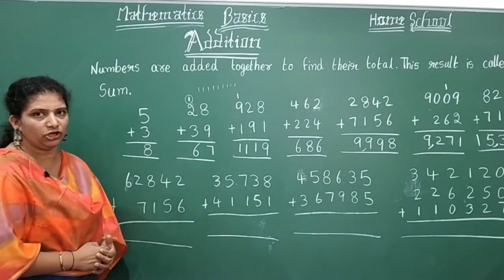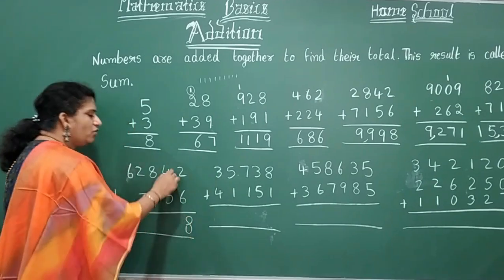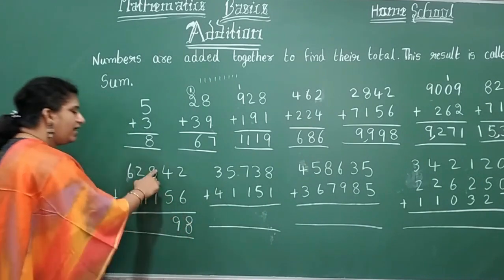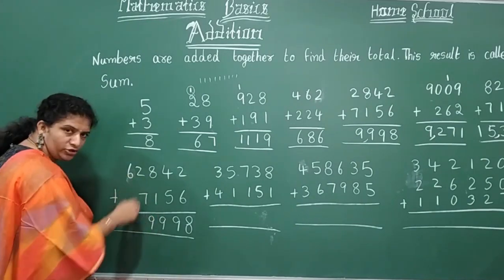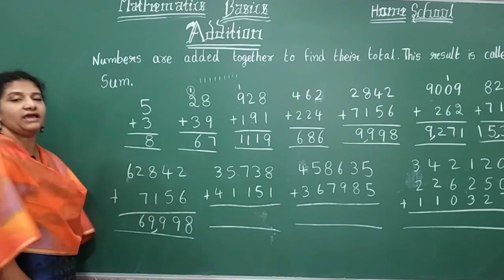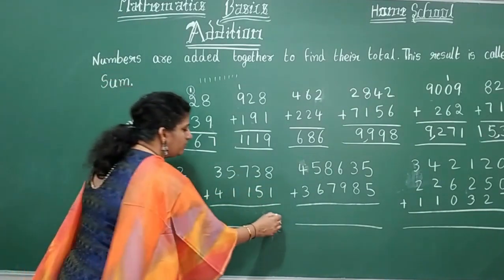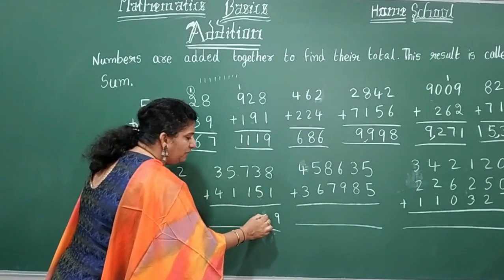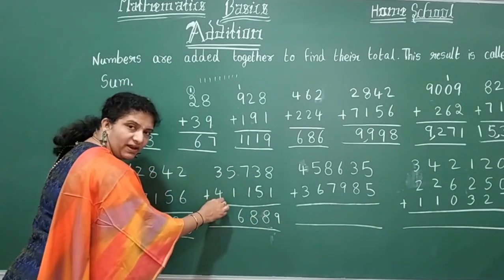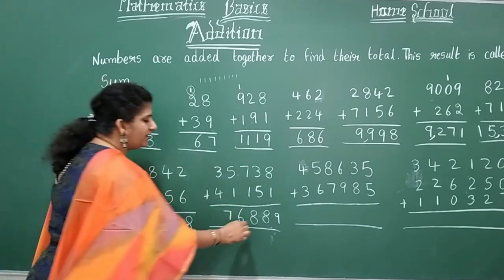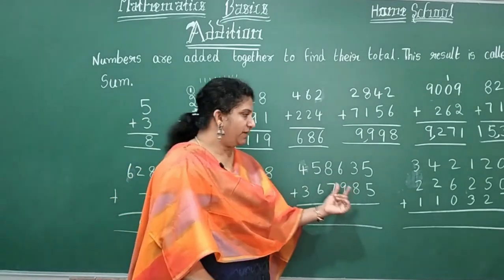Four-digit and five-digit number addition — always start from units place. Two plus six equals eight. Four plus five equals nine. Eight plus one equals nine. Two plus seven equals nine. Six plus nothing — drag that number down. Answer: sixty-nine thousand nine hundred ninety-eight. Next: eight plus one equals nine, three plus five equals eight, seven plus one equals eight, five plus one equals six, three plus four equals seven. Final answer: seventy-six thousand eight hundred eighty-nine.